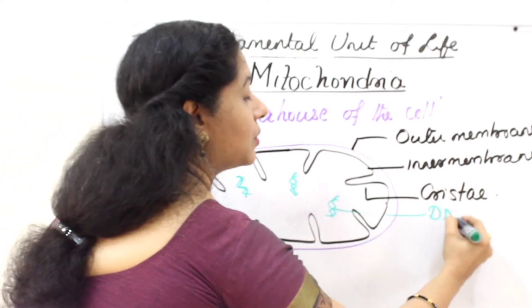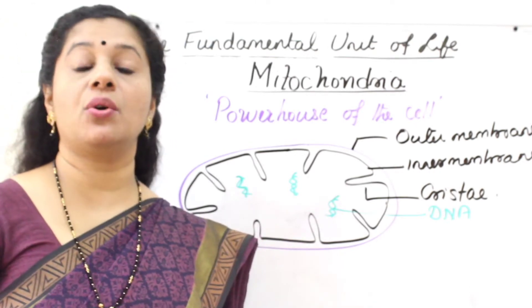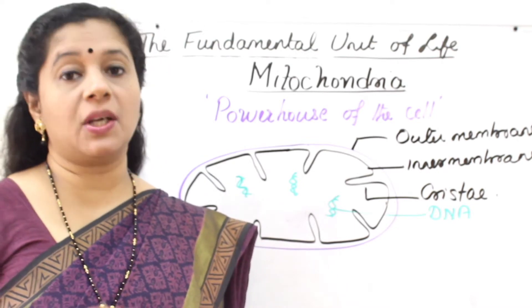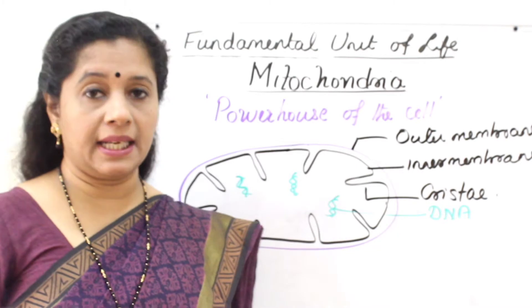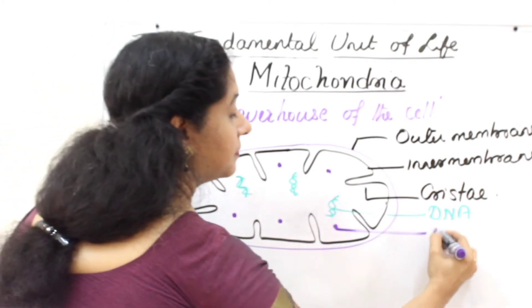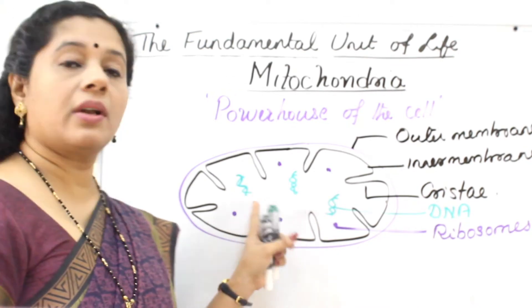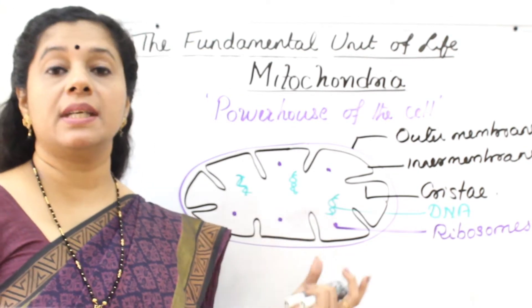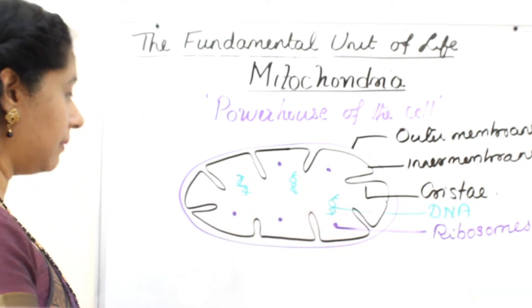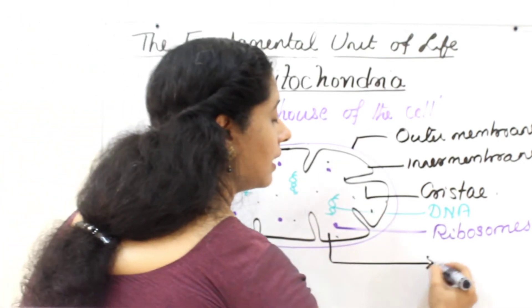Now within the mitochondria we find DNA. DNA is usually found only in the nucleus, but apart from the nucleus, these two organelles — mitochondria and chloroplast — have their own DNA. So they are called strange organelles because no other organelles have their own DNA. Along with DNA, they also have ribosomes. Ribosomes are the protein factories of the cell, so these organelles can prepare their own proteins using the information on their DNA and ribosomes. The fluid inside is called the matrix.